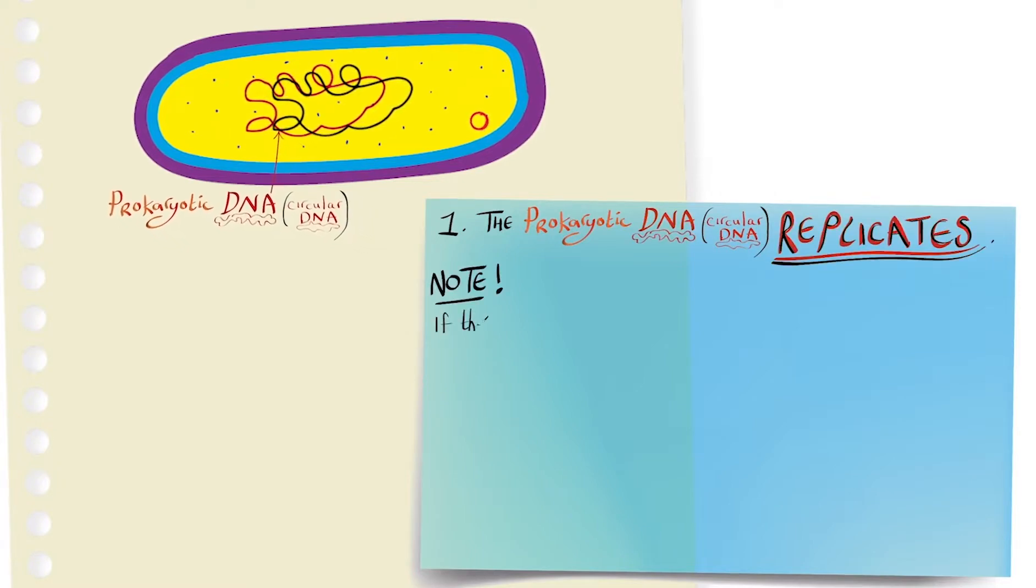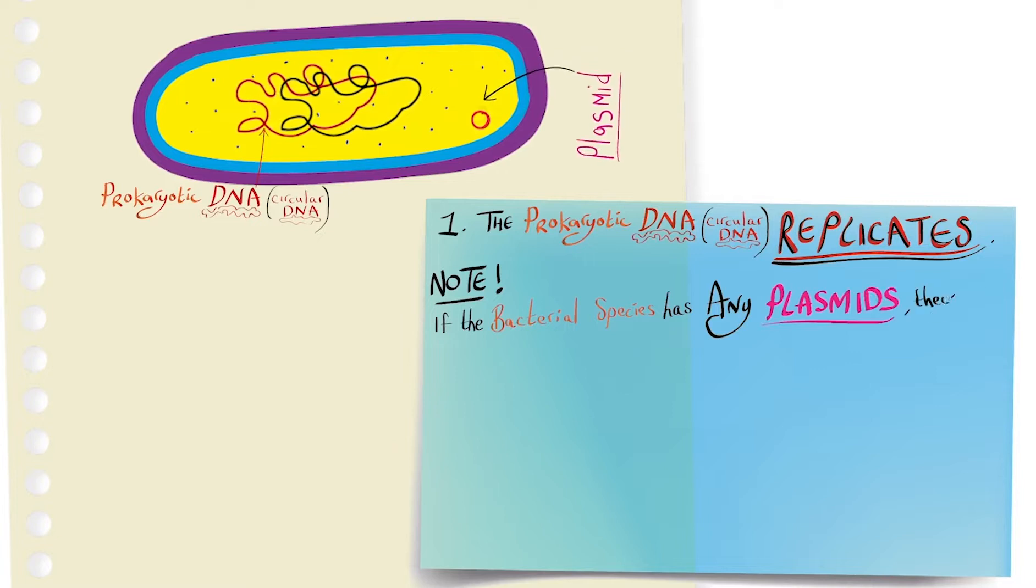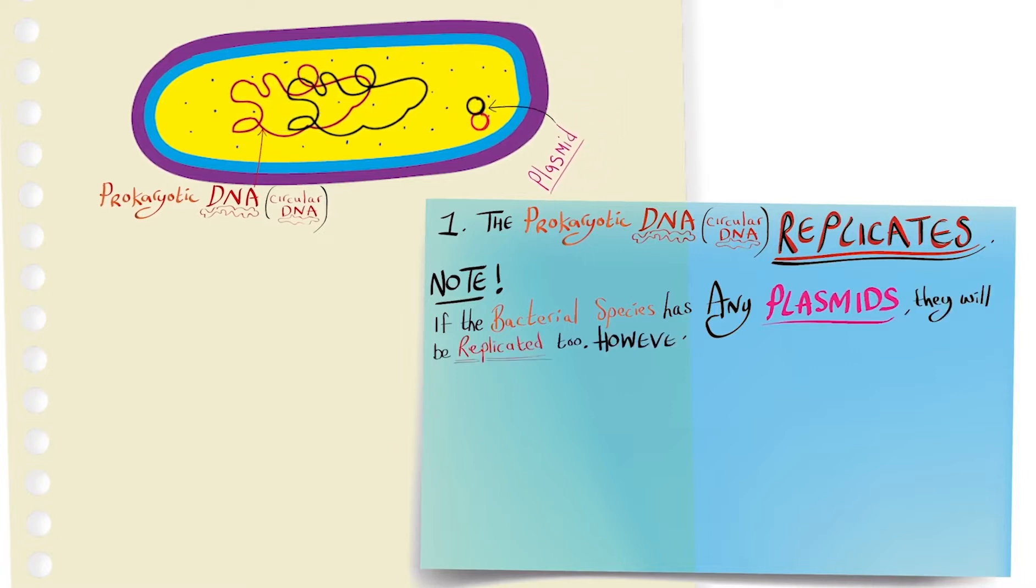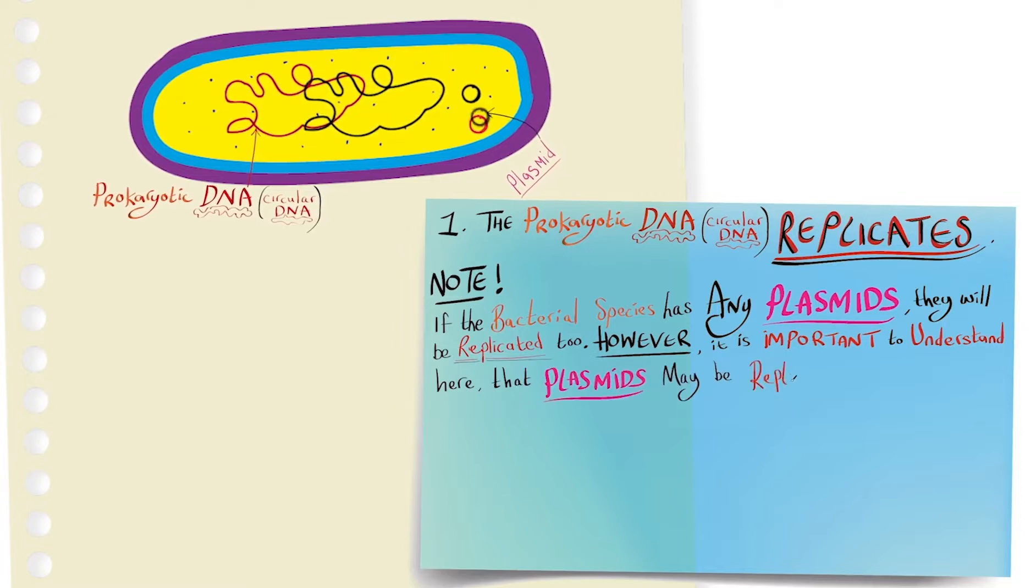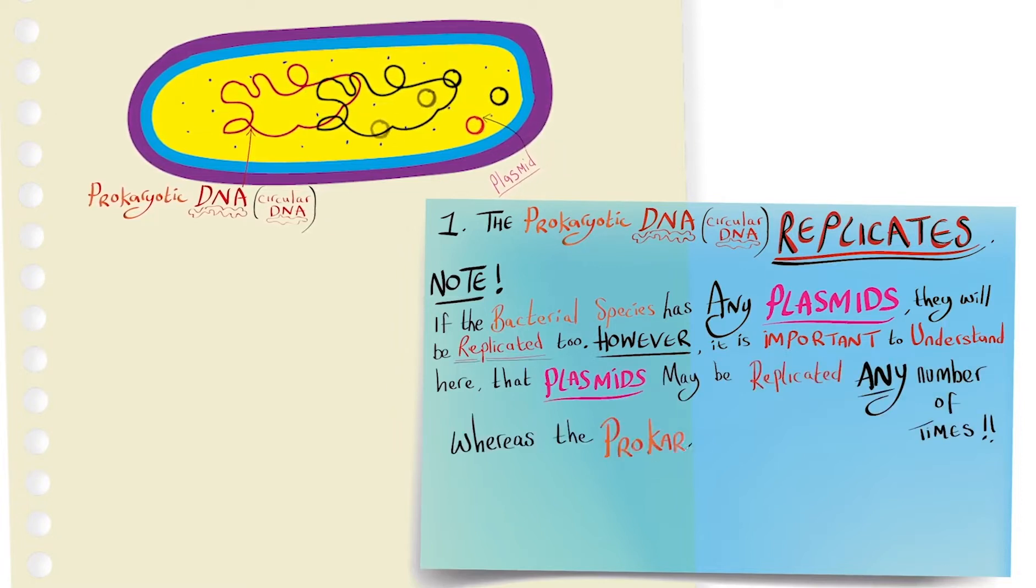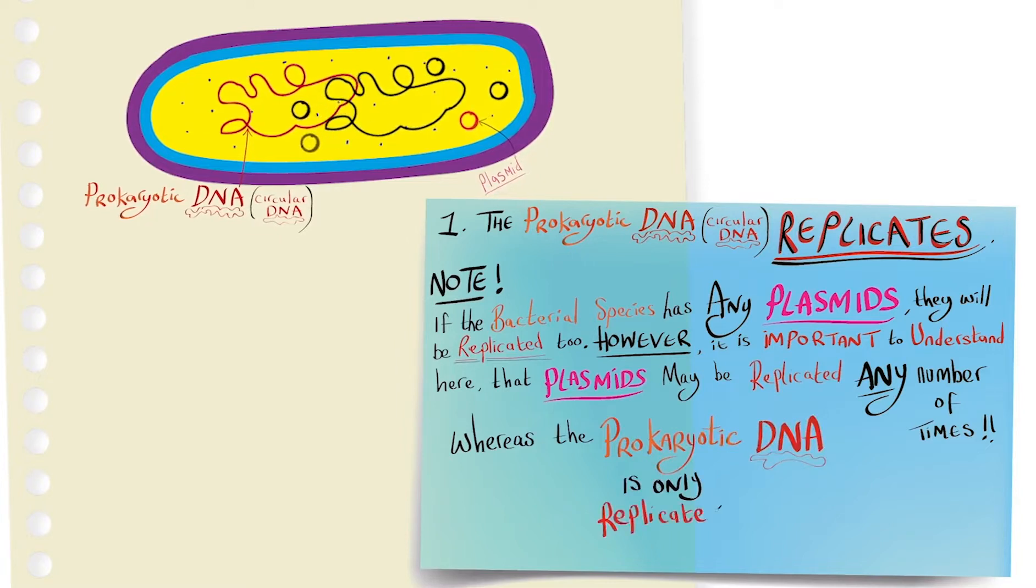Note that if the bacterial species has any plasmids, they will be replicated here too. However, it is important to understand here that plasmids may be replicated any number of times, whereas the prokaryotic DNA is only replicated once.